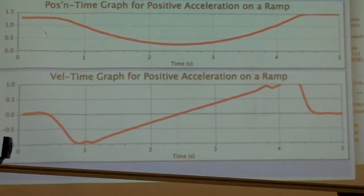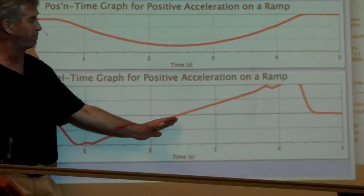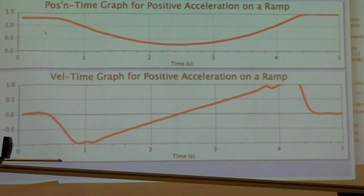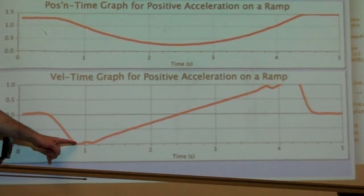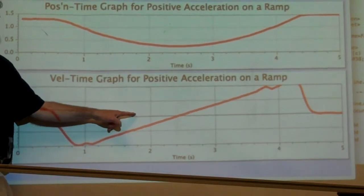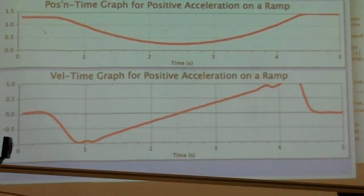If we look at the velocity time graph, we see something very different. We see a line that slopes upwards, a positively sloped line for the positive acceleration. But initially, the velocity values are down here below the time axis. They're negative velocity values.